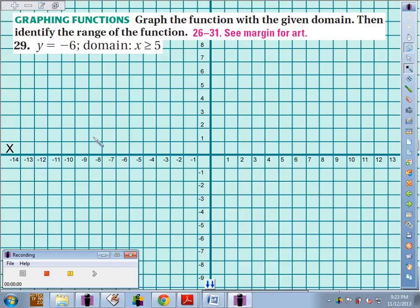Number 29, we're supposed to graph the equation y equals negative 6 with a domain of x is greater than or equal to 5.